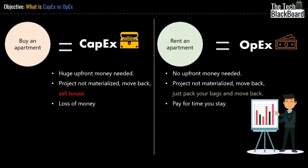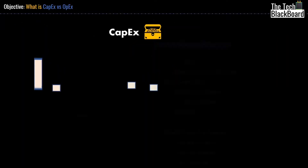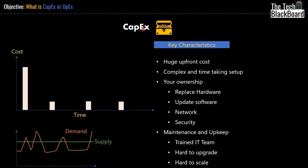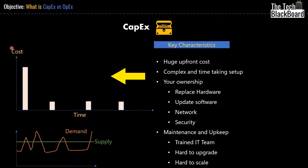Let's take a deep dive and look at some of the key characteristics of CapEx. The first characteristic is huge upfront cost. Whenever you talk about CapEx you are essentially talking about an upfront cost or initial investment. On the graph shown, the x-axis represents time and the y-axis represents cost.